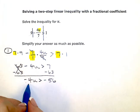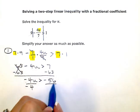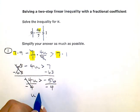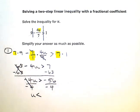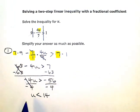My last step now is to get rid of this coefficient. Now I am dividing by a negative, so when I take this step I'm going to need to flip my inequality sign. When I simplify, I'll be left with u on the left, with the inequality flipped to go the other way, and negative fifty-six divided by negative four on the right, which gives me positive fourteen. So the solution here is u is less than fourteen.